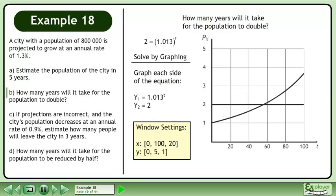Graph each side of the equation. The point of intersection is 53.72. The population will double in approximately 54 years.